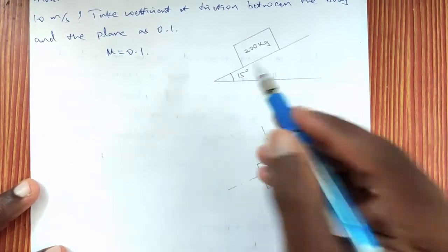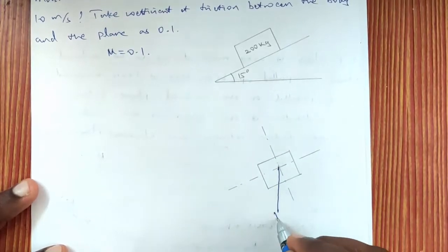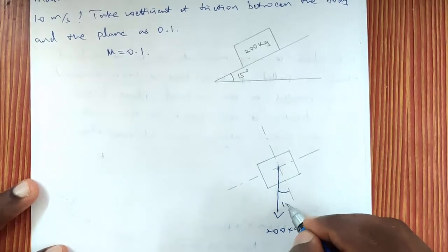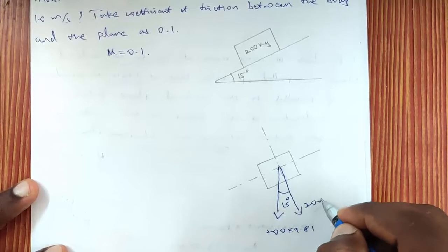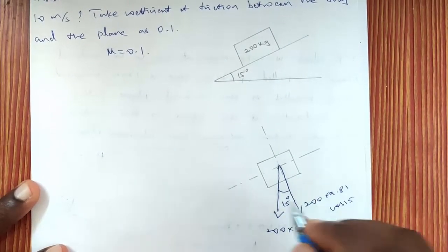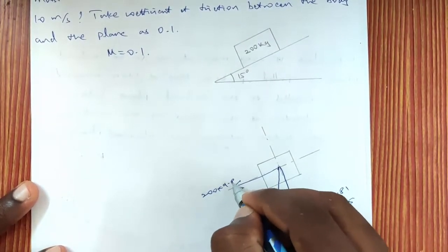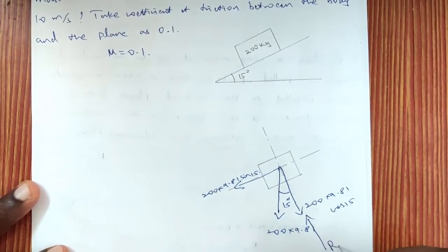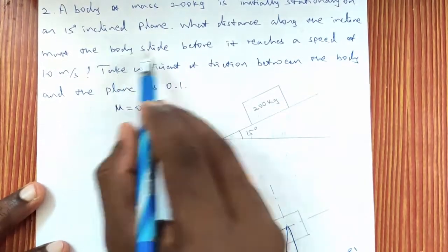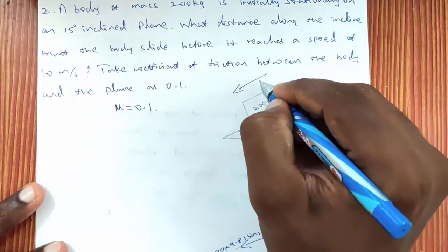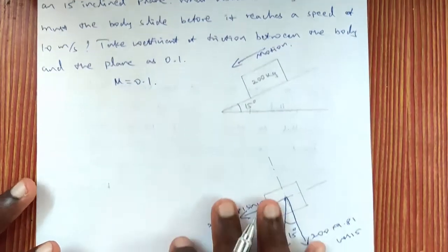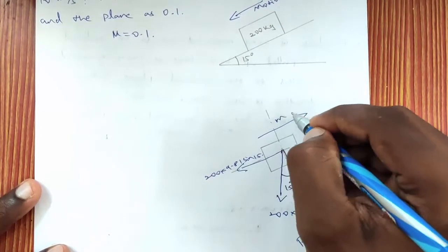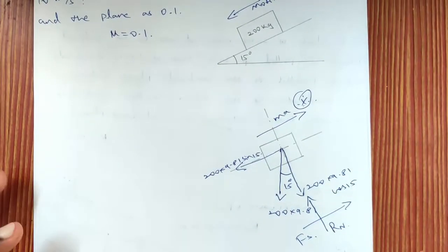The 200 kg block rests on a 15° inclined plane. The weight 200 × 9.81 acts downward and is resolved into two components: 200 × 9.81 cos15° and 200 × 9.81 sin15°. The normal reaction RN acts upward perpendicular to the surface. The body is sliding downward, so the frictional force Fs and the inertial force ma both act in the opposite direction — towards the right-hand side.